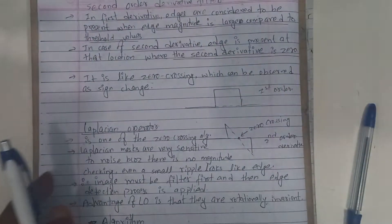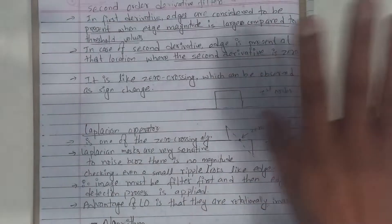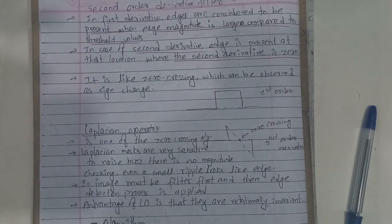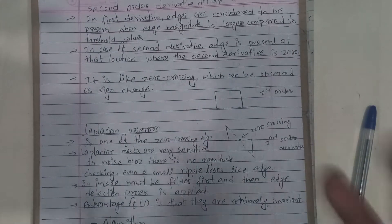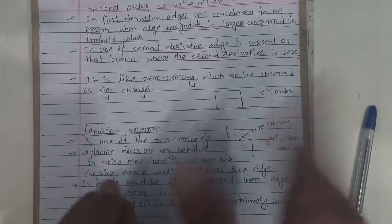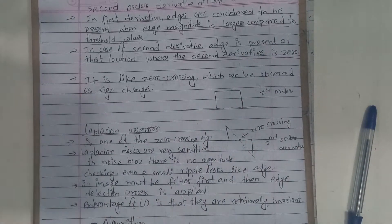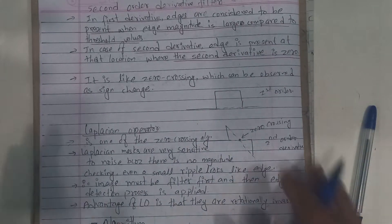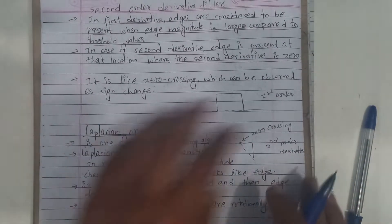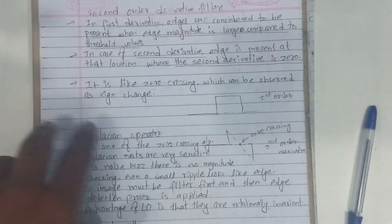The first derivative gives magnitude and direction, and the direction is 90 degrees. What is the derivative of the first derivative?